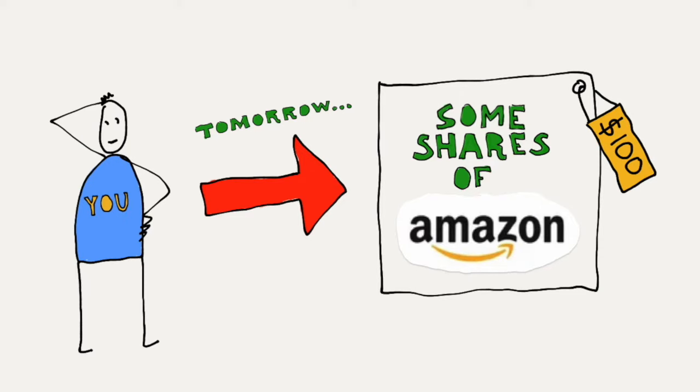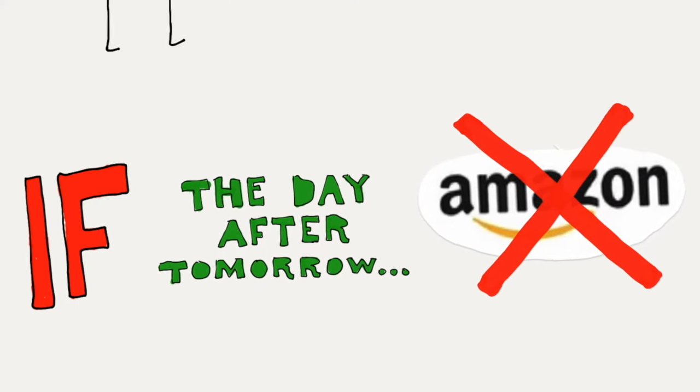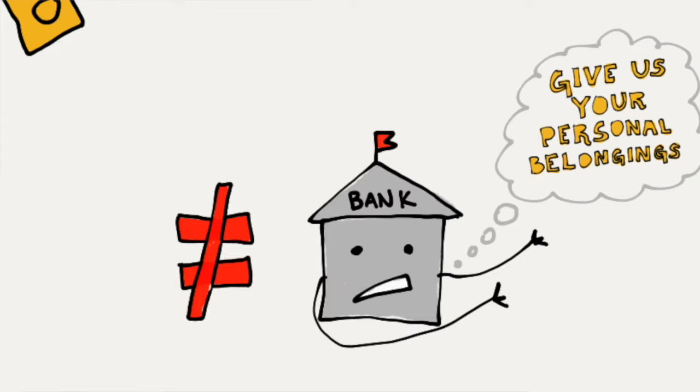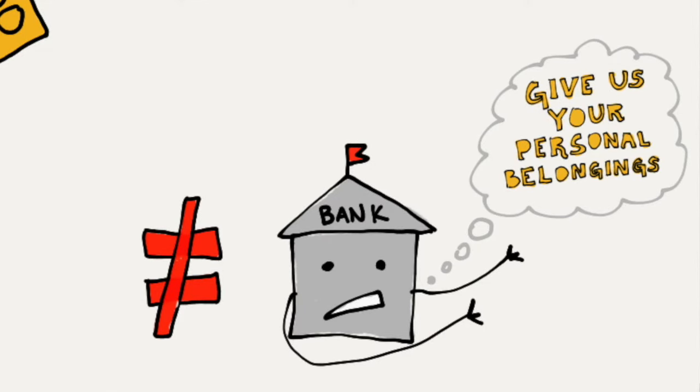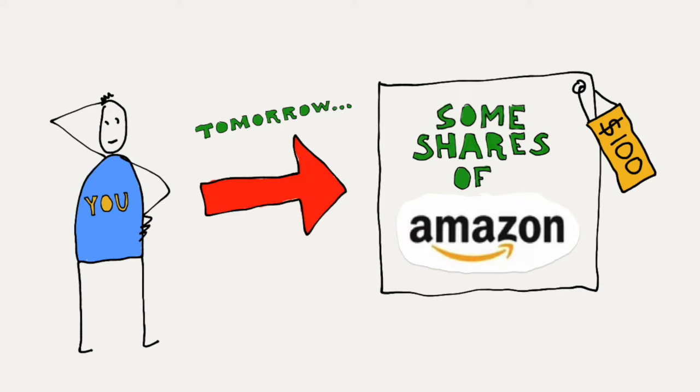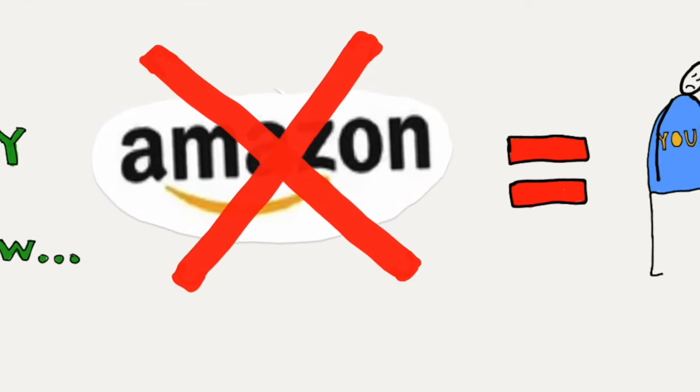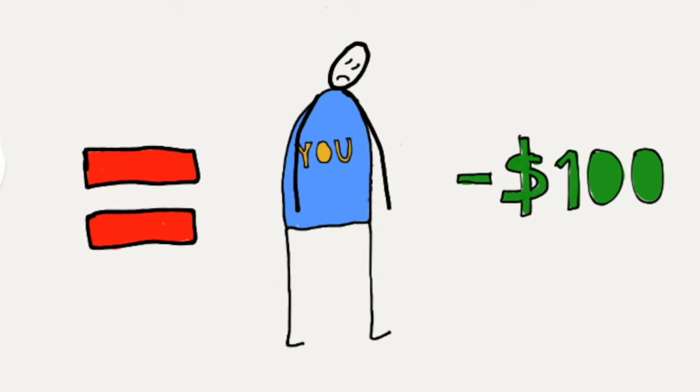This is a pessimistic example, and in most cases the loans that unlimited liability businesses have are pretty small — most sole traders do not end up losing their personal possessions. Limited liability means that your responsibility for the business is limited to your initial investment. For example, if you buy shares of Amazon and Amazon goes bankrupt, no one will come to your house to take your belongings. Your biggest risk is losing your initial investment — say $100 in shares. Your liability is limited to that $100.